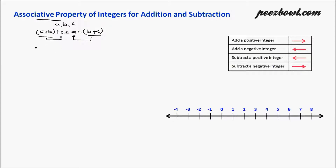Let us understand this by an example. Suppose we have three integers: minus four, eight, and minus two. Let us put these integer values into our left hand side equation. At the place of a and b, I am putting minus four plus eight in a bracket, and then we are adding minus two.